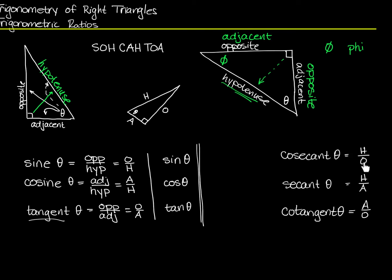It's not really the hypotenuse over the opposite — it's the length of the hypotenuse of the triangle divided by the length of the side opposite theta. I'm already abbreviating by just using H and O, meaning the length of the hypotenuse divided by the length of the side opposite theta.